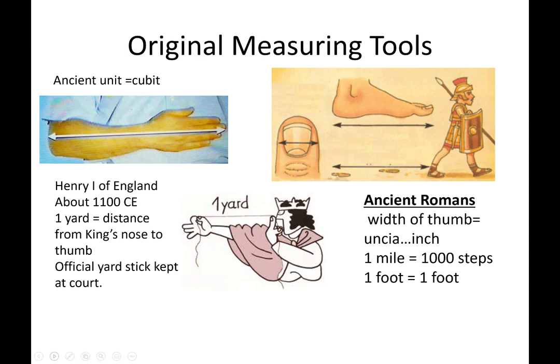Prior to there being organized system of units, people used whatever was handy, and body parts were handy. The ancient Romans used things like the thumb. The width of the thumb was the uncia. The uncia is where we get our word inch. A mile was how far Roman soldiers could walk. A thousand steps were equivalent to a mile. A foot was a foot. The ancient unit, the cubit, and if you are a biblical scholar, Noah built the ark so many cubits by so many cubits. The cubit is elbow to fingertips.